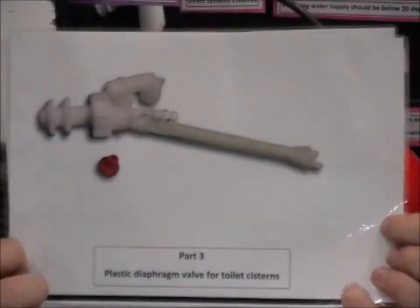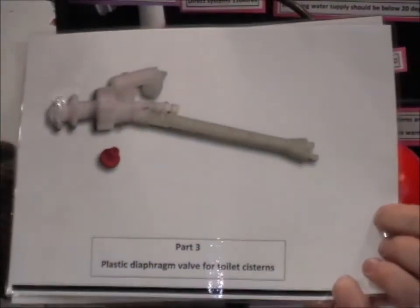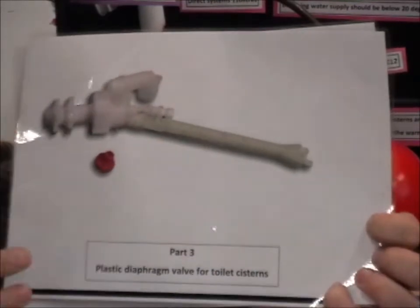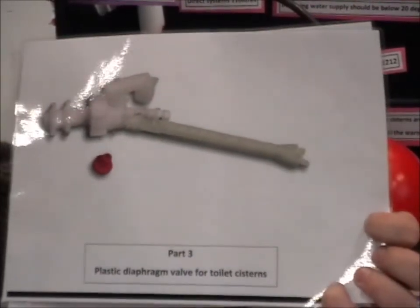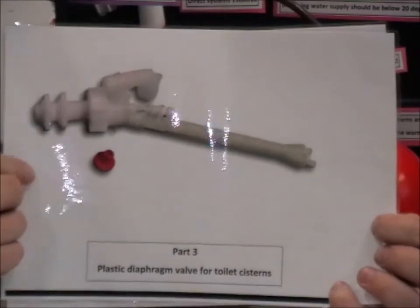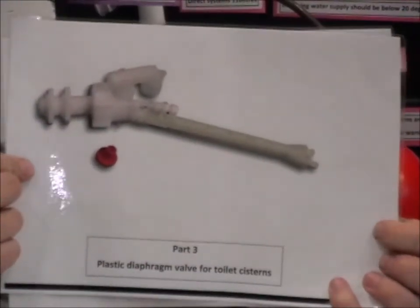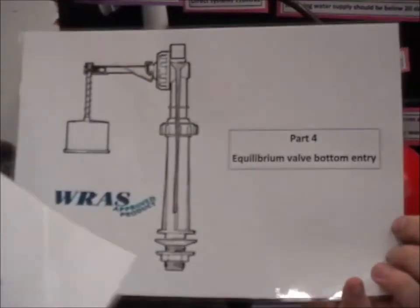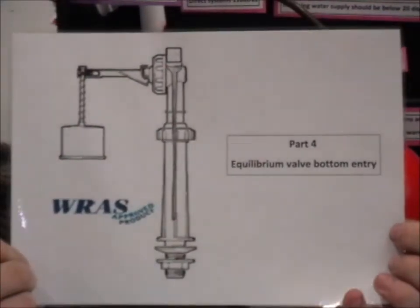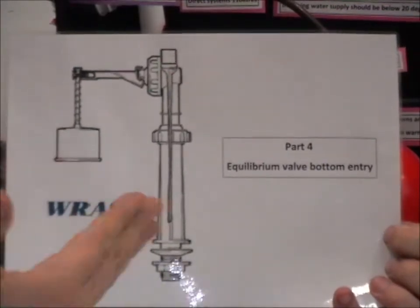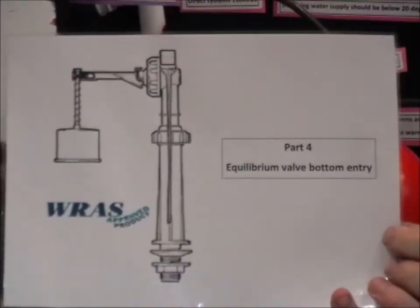Part three ball valve, these can be bottom entry as well, these are for toilet systems. The difference is, this is plastic, can't handle much pressure. Again, same principle, diaphragm washer with an orifice for the seating. Part four is the equilibrium type, where it uses the mains pressure to shut off. You can't use these on low pressure systems.